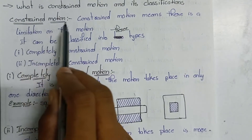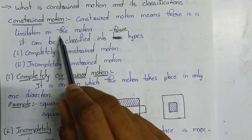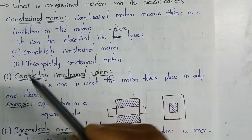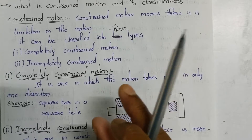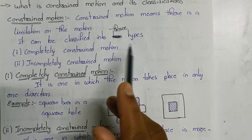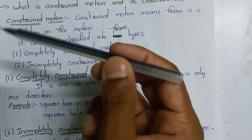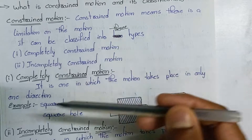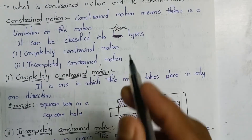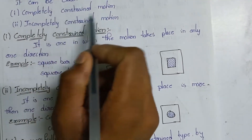First, let's look at constrained motion. Constrained motion means there is a limit on the motion. Every motion has a limit — if there is no limit it is not constrained motion. For example, consider water: it can rotate or move in any direction. If there is a limit on the motion, then it is constrained motion. There are three types: completely constrained, incompletely constrained, and successfully constrained.